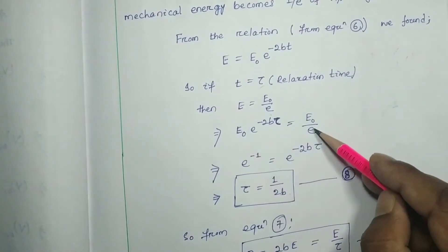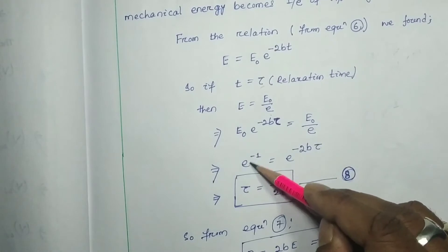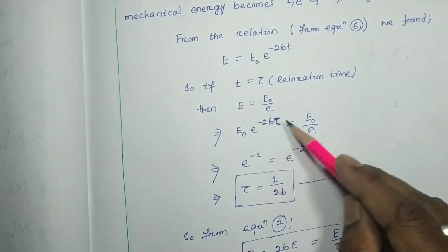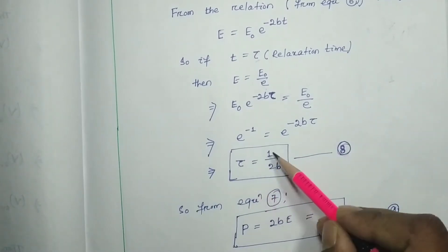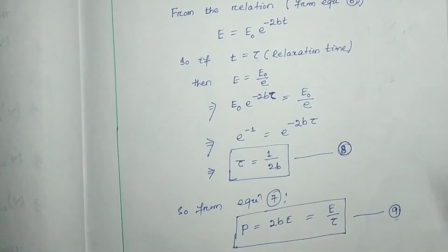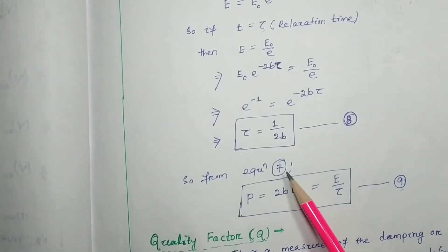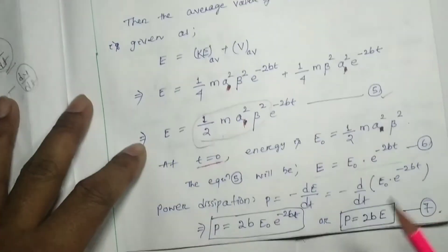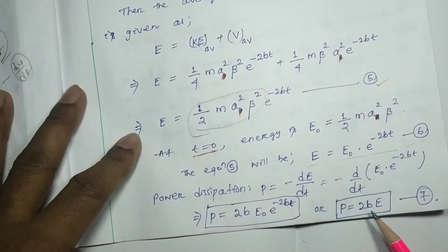E₀ cancels on both sides, giving 1/e, or e^(−1). So e^(−1) = e^(−Bτ), and hence tau equals 1/B — let this be equation number 8. From equation number 7, considering power dissipation per second, that is 2B into E.